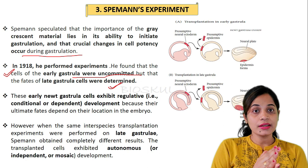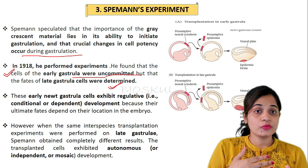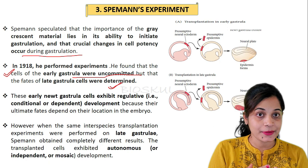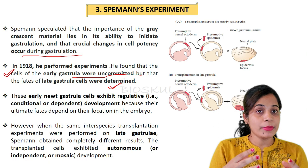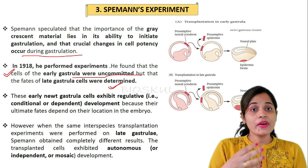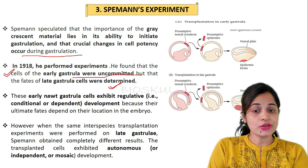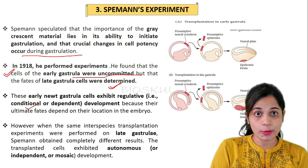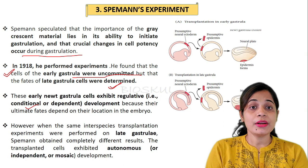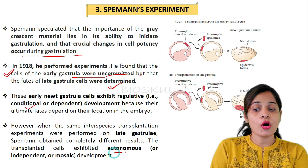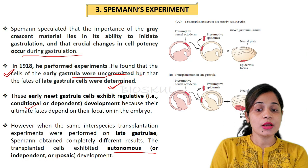As an analogy: in childhood, what we become depends on the environment, but when grown up it depends on ourselves and is quite determined. Similarly, in the early gastrula the cell fate is uncommitted and depends on neighboring cells, whereas late gastrula cells are determined. Only early gastrula cells exhibit regulative or conditional development. When the same experiment was conducted with late gastrula, Spemann obtained a different result because late gastrulas show autonomous specification — cell fate depends on the cell itself.